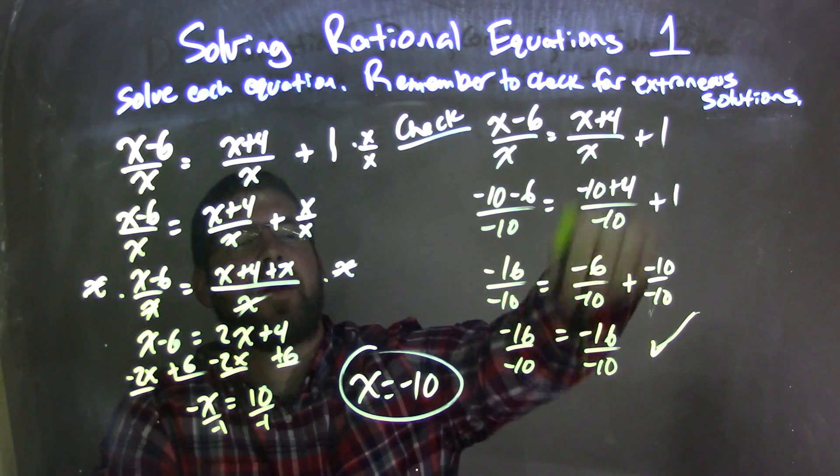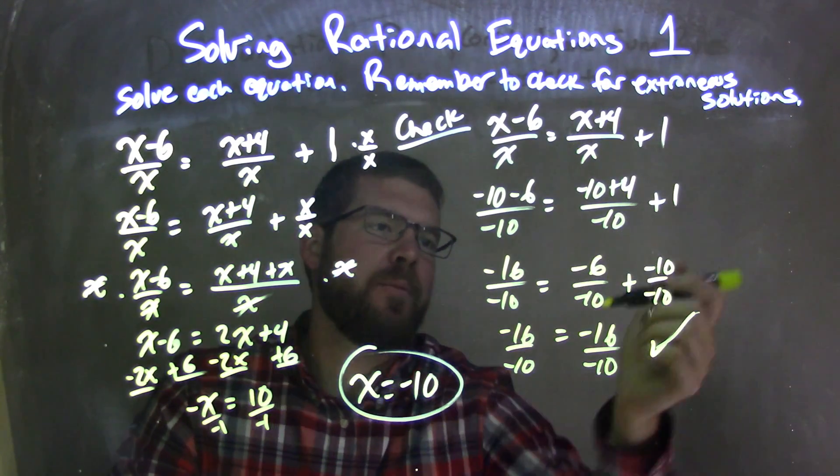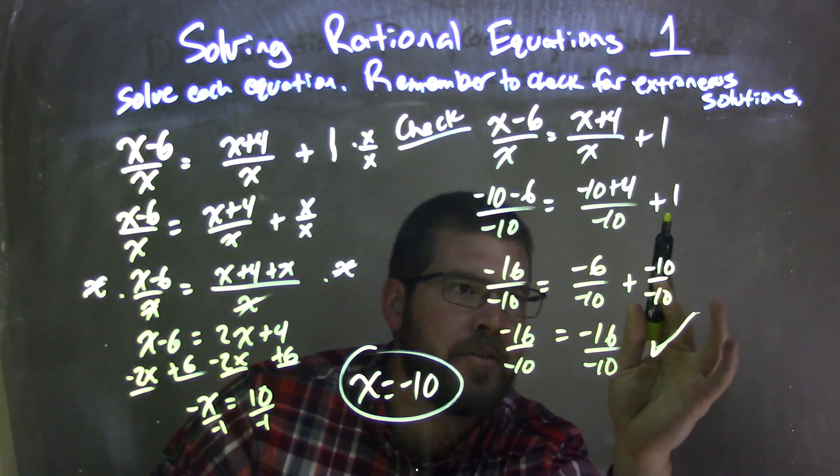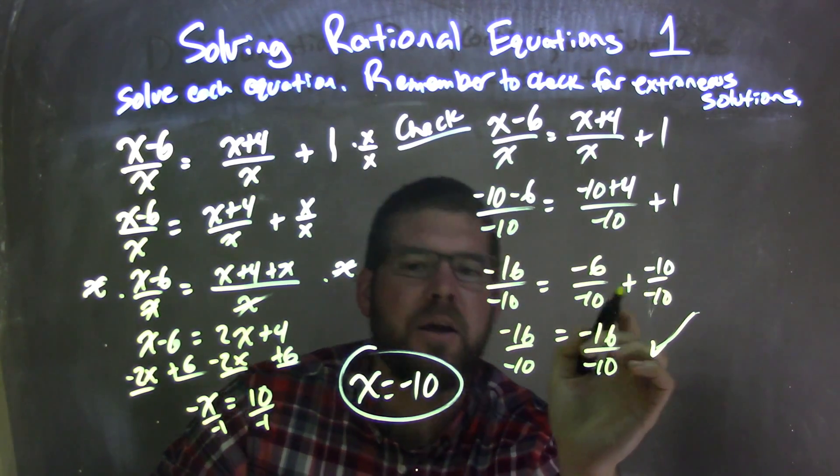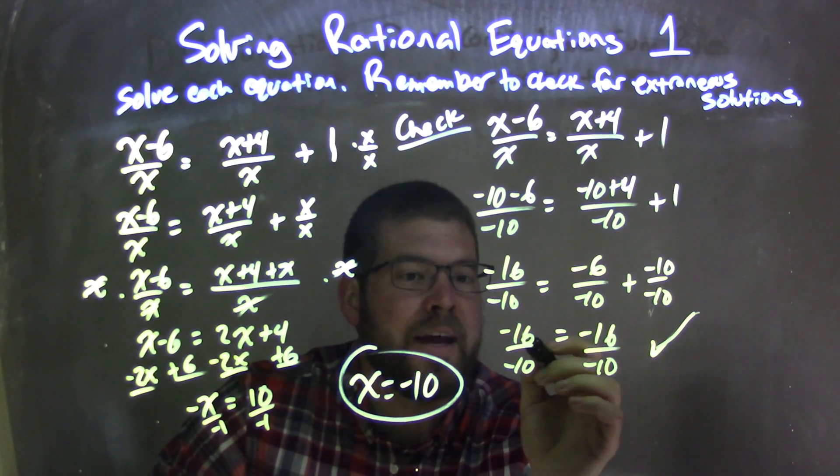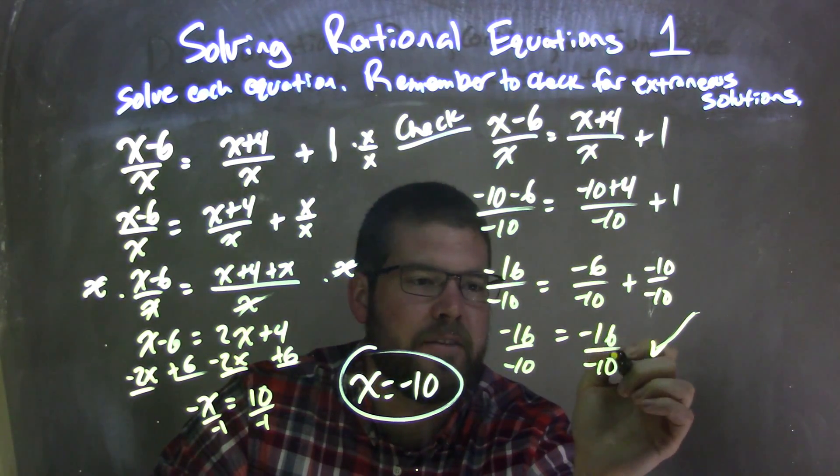I then checked by rewriting my equation, plugging negative 10 in, and simplify, simplify, simplify. And in doing so, the key thing here is that line, I've turned it to negative 10 over 10, so I can have the same base and fractions, so I can combine them together, but my left and right-hand side were equal at negative 16 over negative 10 equals negative 16 over negative 10.